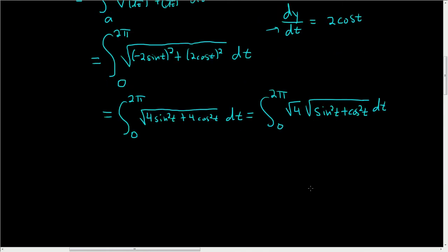And the square root of 4 is 2, so this is 0 to 2π, 2. And sin² + cos² is 1, so it's 2 times the square root of 1 dt.